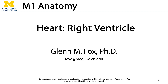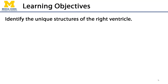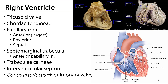Hi, let's talk about the right ventricle. In this video we'll discuss the structures unique to the right ventricle. The right ventricle receives blood from the right atrium. We can see the orifice for the tricuspid valve there. Recall that there are anterior, posterior, and septal cusps for the tricuspid valve.